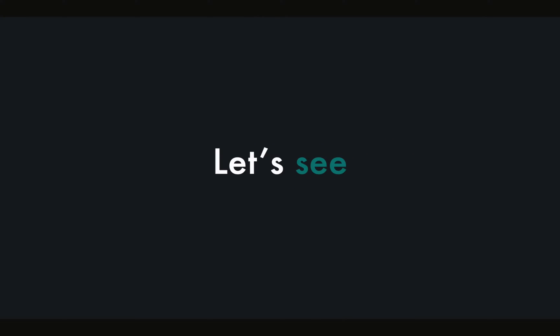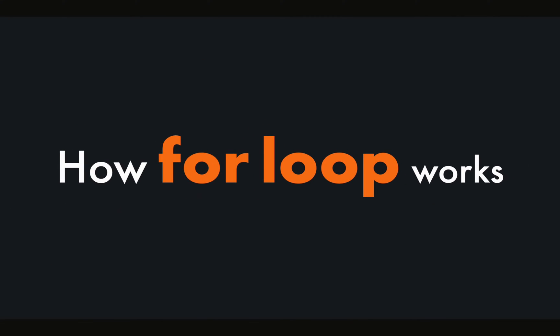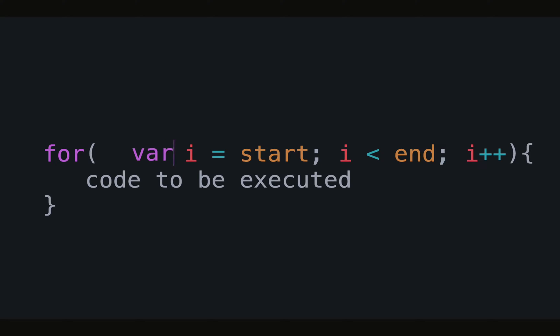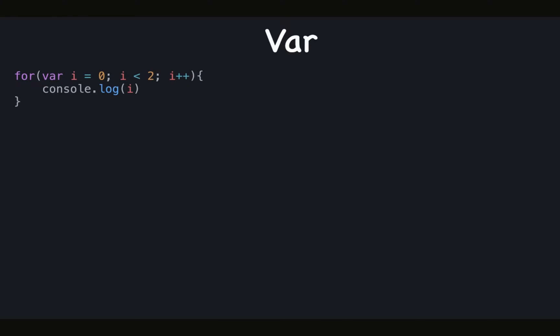In this episode, let's see how a for loop works against var, let, and const variables. Here we have a for loop with var declaration. var is hoisted to global scope or to the parent function scope. We can rewrite the code so that the increment happens at the end of each iteration, moving i++ to the bottom of the block.